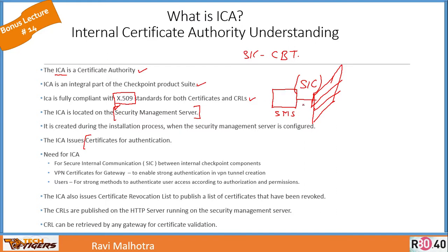In the SIC process, we are trying to authenticate the firewall to the management server as well as vice versa. As long as the certificate is valid, the management server will keep trusting the security gateway. But the moment the certificate is not valid or the trust is broken, that certificate will not be of any use — it will be revoked, and we will have to rebuild the trust. Once we rebuild the trust, a new certificate will be issued.